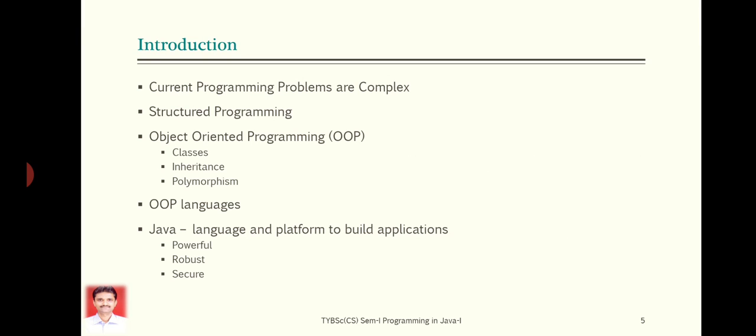Now, as you know, current programming problems are becoming more complex today. Even structured programming cannot handle or cannot manage those complexities easily. Therefore, we use object-oriented programming which makes it possible to organize complex programs using different concepts or different features like classes, inheritance, polymorphism, and so on. As you know, C++ is one of the object-oriented programming languages. Before Java, it was very popular for writing object-oriented programs. However, due to the advent of internet, Java became widely used nowadays in recent years.